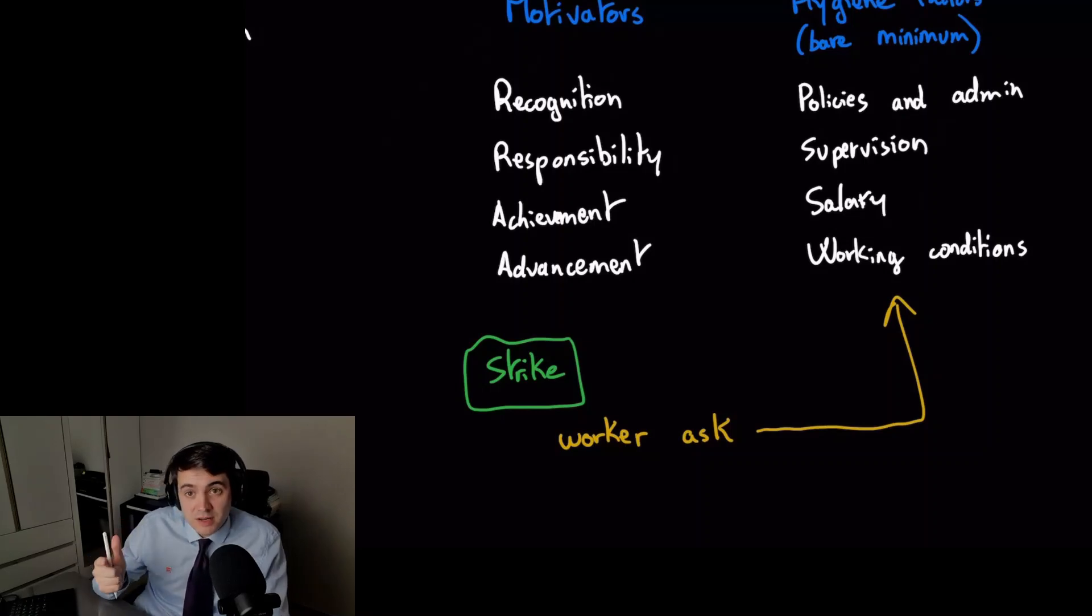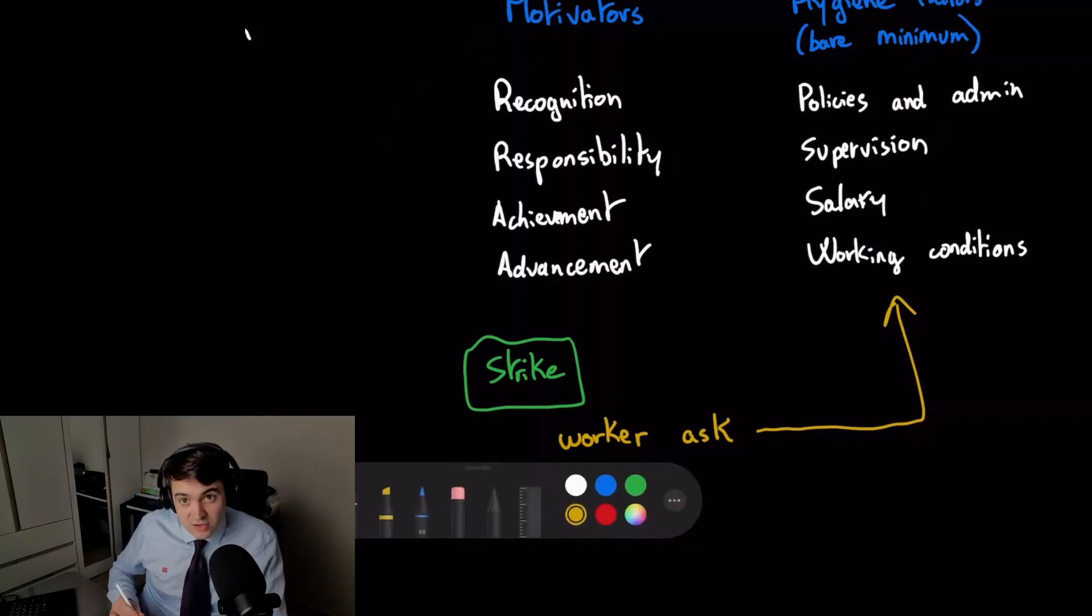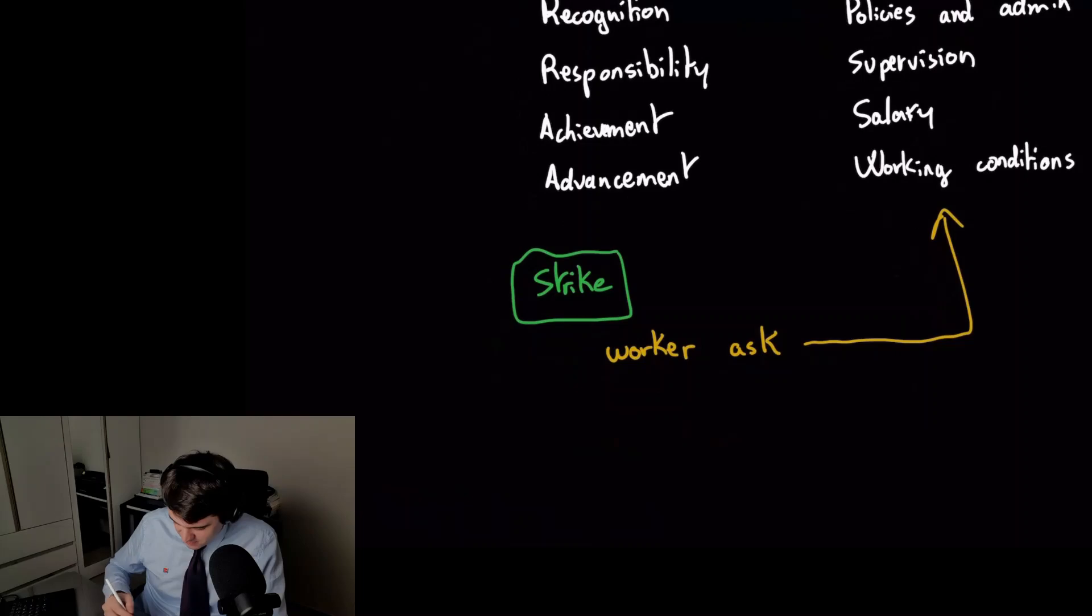More wage, better working conditions, better policies and admin - all the time, that's what happens. Herzberg says they ask this and you can give it to them, but that's not going to motivate, it's not going to improve anything. What's going to improve things, make people more satisfied and more happy? You should actually give motivators.